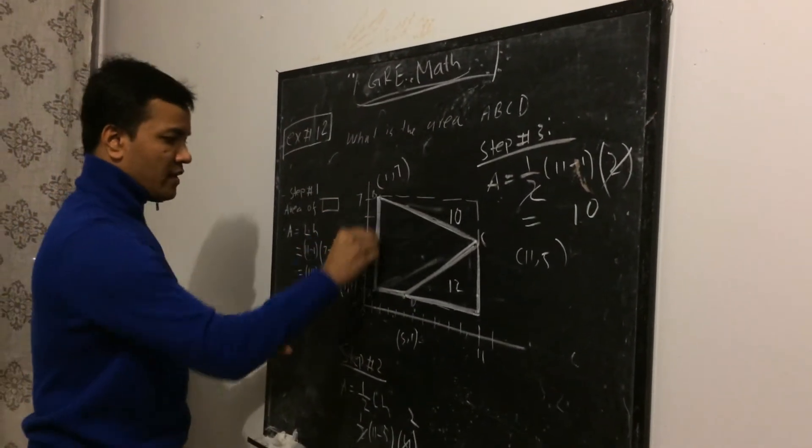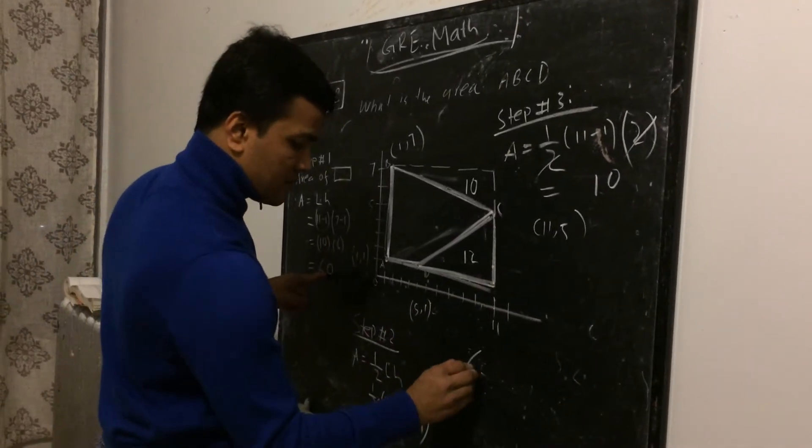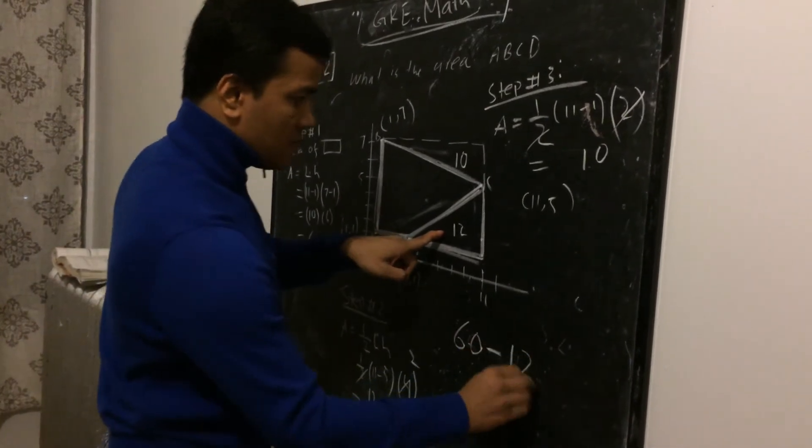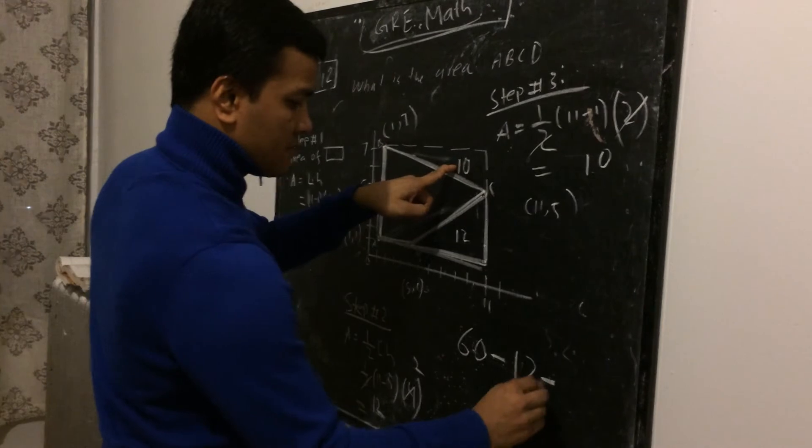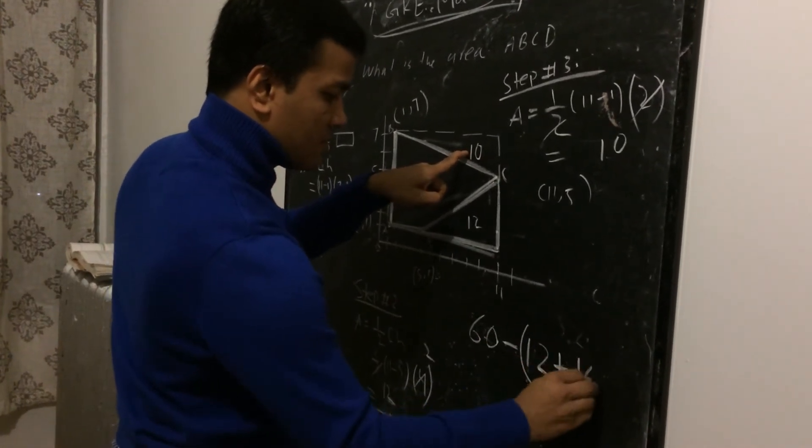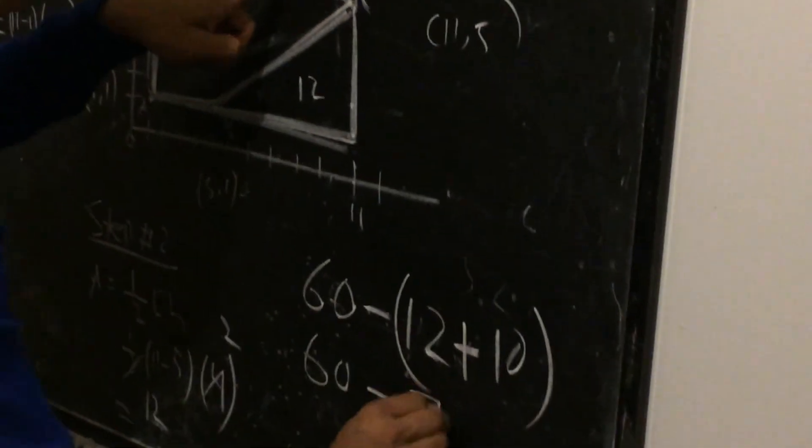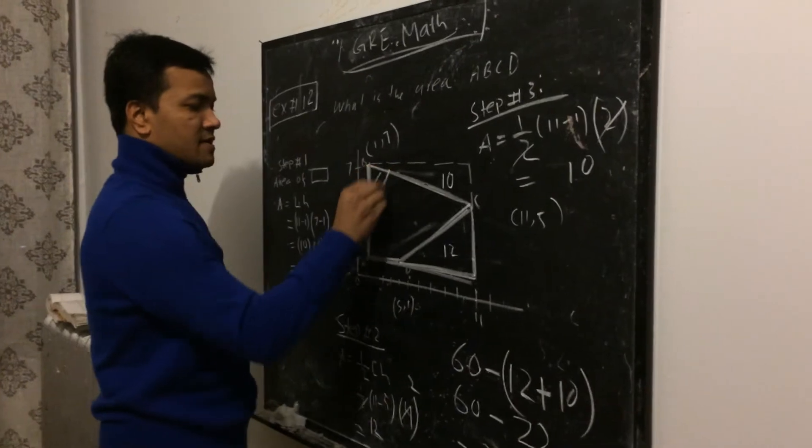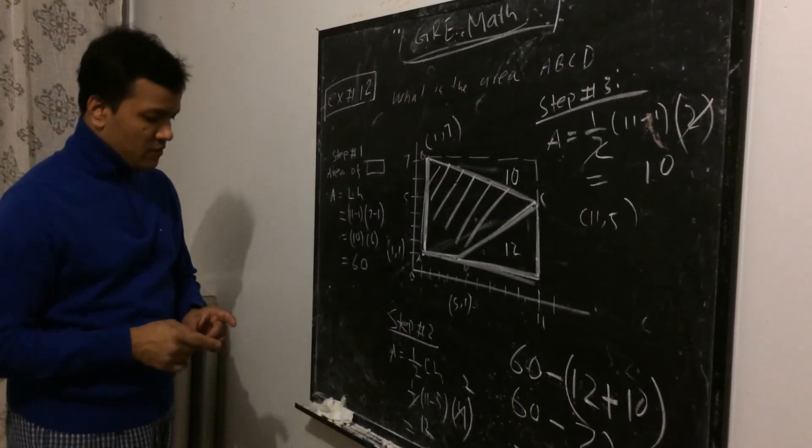Now the whole area of the rectangle is 60. So 60 minus, this is 12. This is 10. So this one is kind of difficult. So we're going to do more.